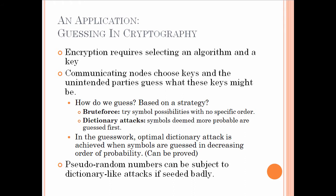It turns out the answer is yes — there are two types of attacks in such a scenario. The first is the brute force attack, trying all symbol possibilities with no specific order. The second is the dictionary attack, which chooses symbols deemed more probable and guesses those first, then proceeds to less probable ones. In terms of guesswork, the optimal dictionary attack is achieved when symbols are guessed in decreasing order of probability, which can be proved by the tools introduced in this lecture series.